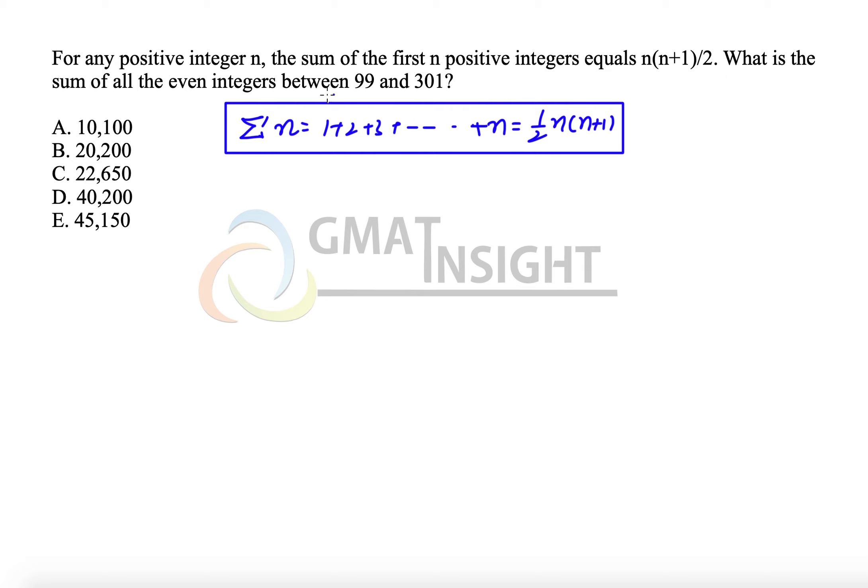What is the sum of all even integers between 99 and 301? There are two ways we can answer this question. One, by using this particular method. Second, without using this method.